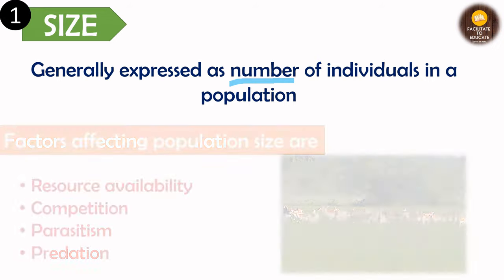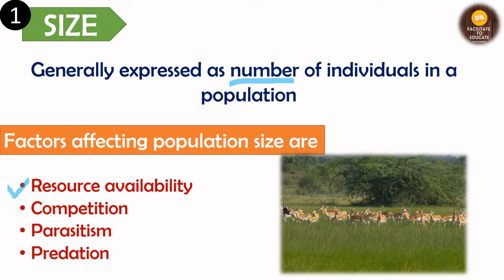There are certain factors which affect the size of the population. First is resource availability — how much resources are available for the species to survive, such as food, minerals, sunlight, or any type of resource. Second is competition: intraspecific competition between individuals of the same species. For example, deer will have intraspecific competition among themselves. Then there is parasitism and predation — if they are predated or attacked by parasites, their number will reduce.